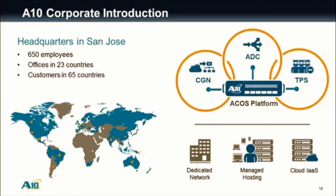A10 Networks is an application delivery controller company founded back in 2004. We have over 650 employees with offices in 23 countries and customers in 65 different countries. We offer three product lines: our flagship application delivery controller product line, our carrier-grade networking product line for IPv4 scaling and IPv6 migration, and our network DDoS protection product — the Thunder Threat Protection System. These products fit into all types of networks, from dedicated networks to managed hosting providers and cloud infrastructure-as-a-service companies.